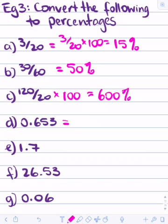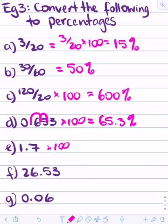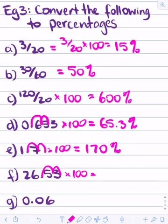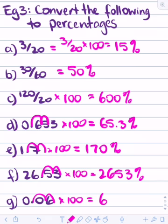For decimals, there are two ways: type it into the calculator, or move the decimal point two hops to the right. So 0.653 times by 100 equals 65.3%. Then 1.7 times by 100 — two hops — equals 170%. Then 26.53 times by 100 equals 2653%. And 0.06 times by 100 equals 6%.